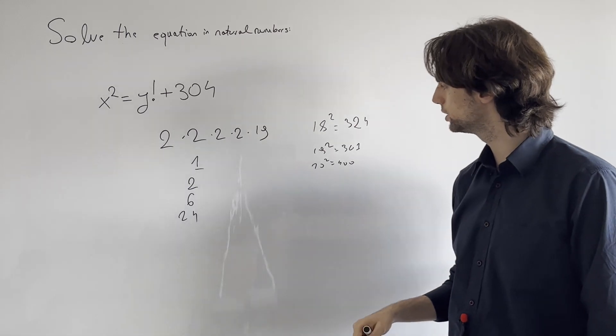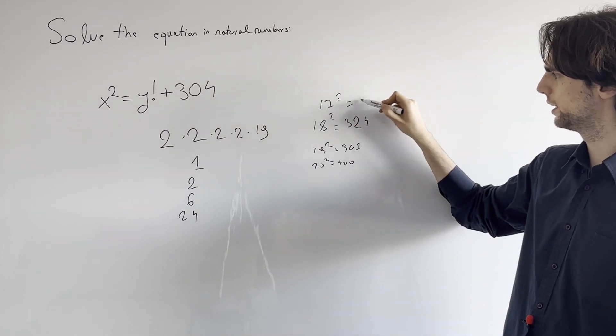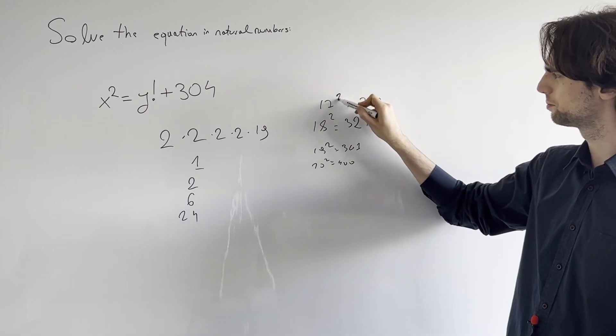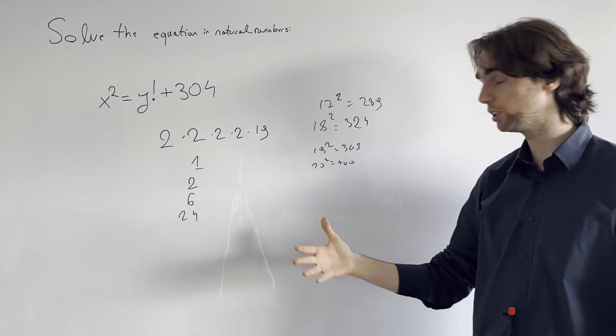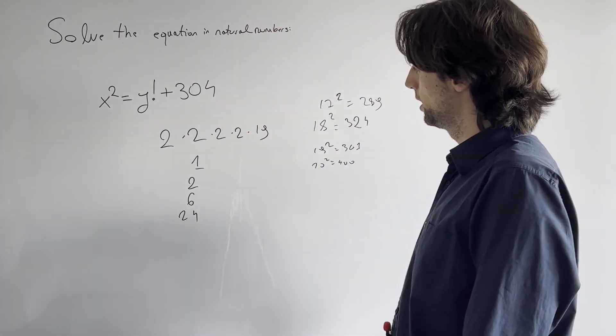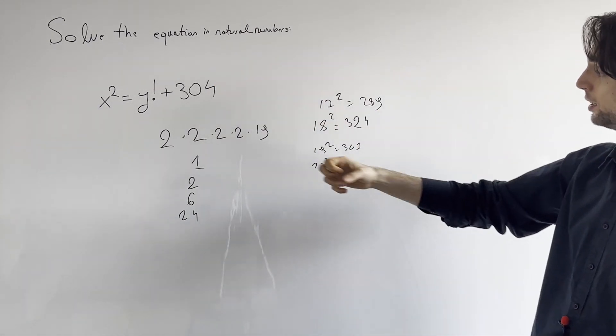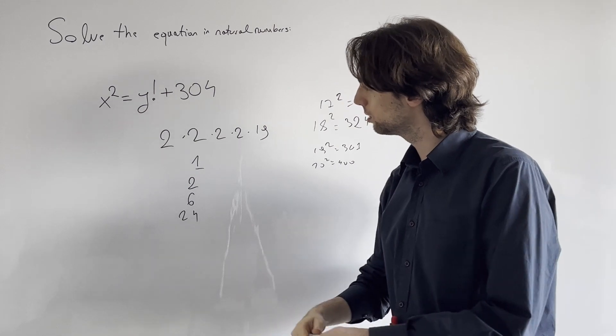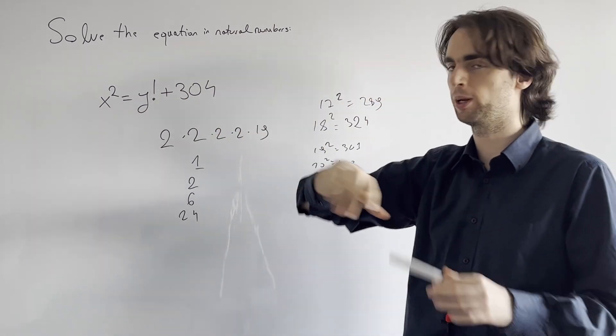304 plus any one of these does not give us a square also. 17 squared is, I think, 289 if I'm not mistaken. And no worries if you don't know these squares. In time, you do them again and again, and you memorize them. Even like after you're done competing like me for a long time. So what do we have here? Well, we have what the factors of this 304 are.